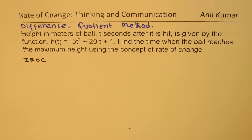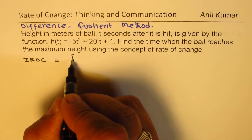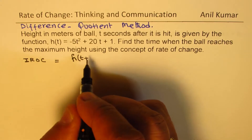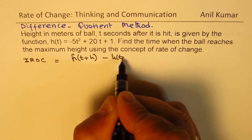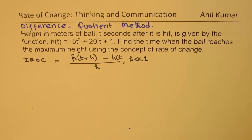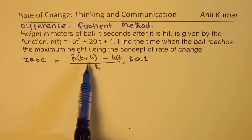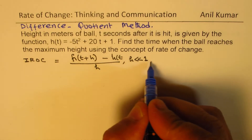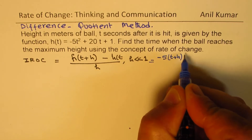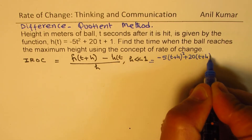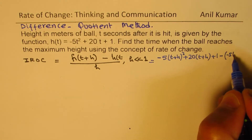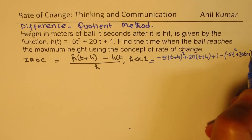We will find the instantaneous rate of change using the difference quotient formula. Since the function is height, we write: h of (t plus h) minus h of t, all over h, where h is very small. Substituting, we get: minus 5(t plus h) squared plus 20(t plus h) plus 1, minus the quantity minus 5t squared plus 20t plus 1, all over h.